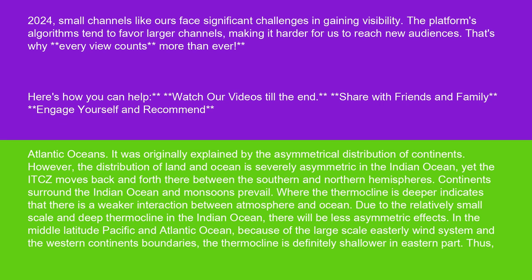However, the distribution of land and ocean is severely asymmetric in the Indian Ocean, yet the ITCZ moves back and forth there between the southern and northern hemispheres. Continents surround the Indian Ocean and monsoons prevail. Where the thermocline is deeper indicates a weaker interaction between atmosphere and ocean. Due to the relatively small scale and deep thermocline in the Indian Ocean, there will be less asymmetric effects.